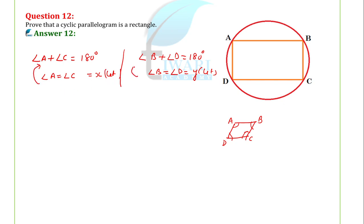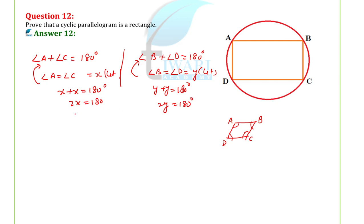Is equation mein use karte hai — angle A equal to angle C is X, means X plus X is 180. Isi tarah se Y plus Y is 180. So 2X is 180 degree, 2Y is 180 degree. That means X is 180 by 2, means 90 degree. Similarly, Y is 180 by 2, means 90 degree.